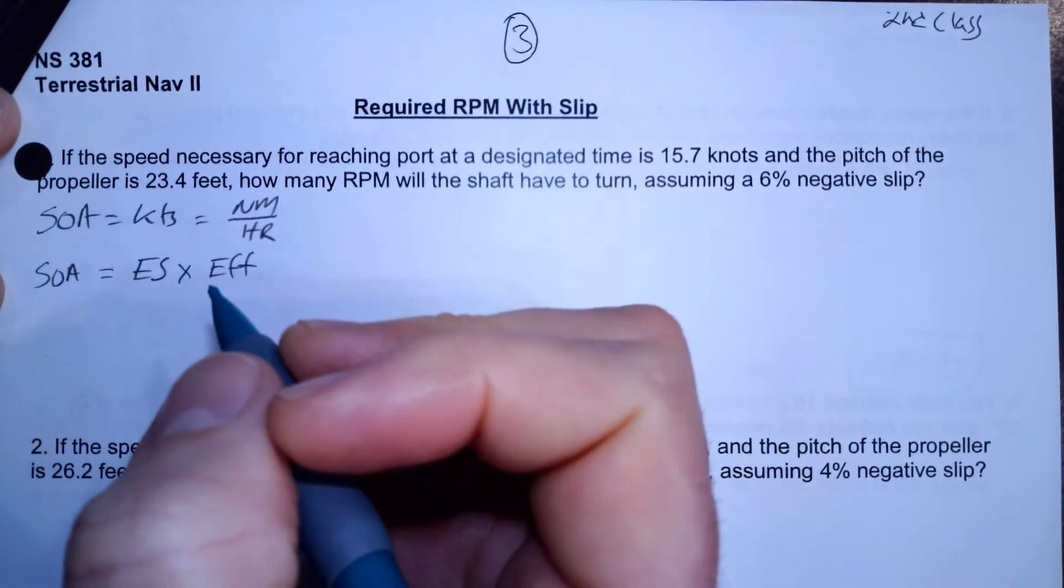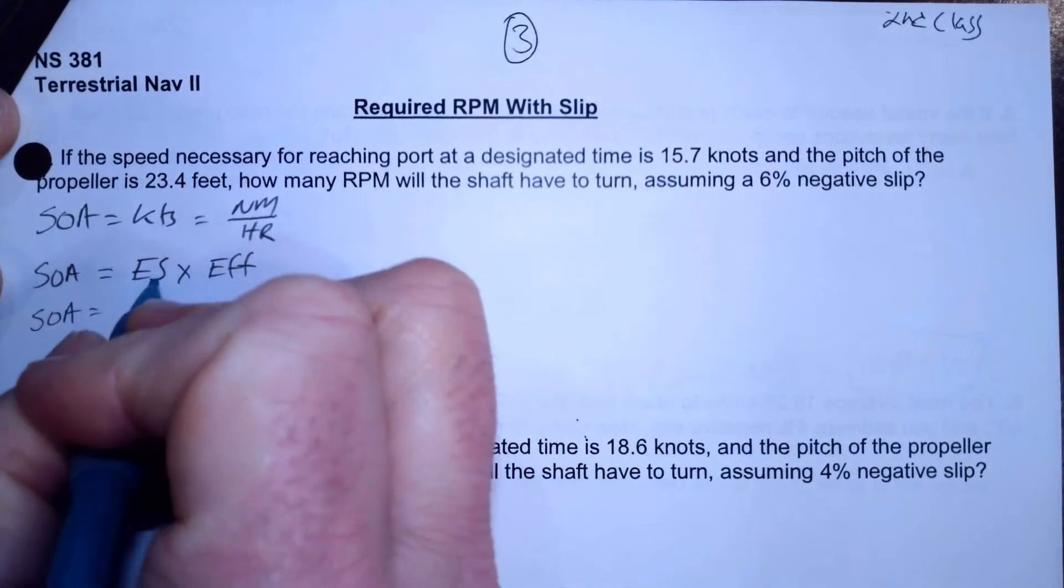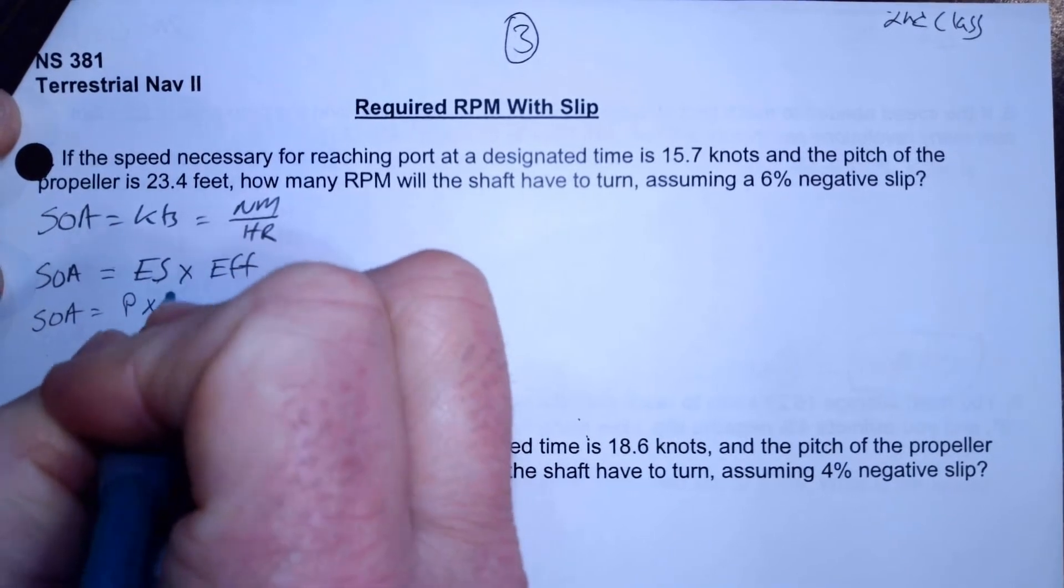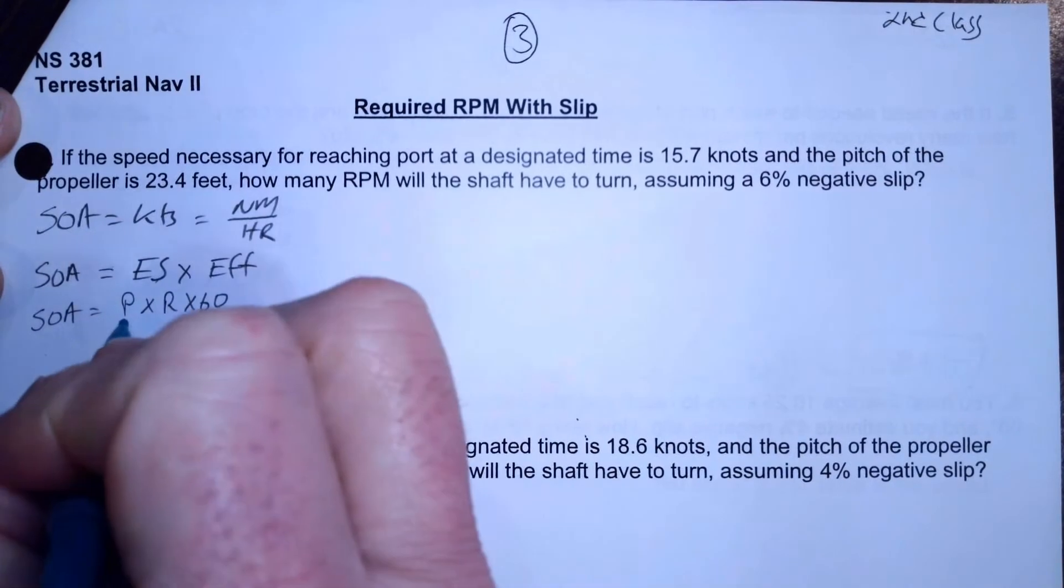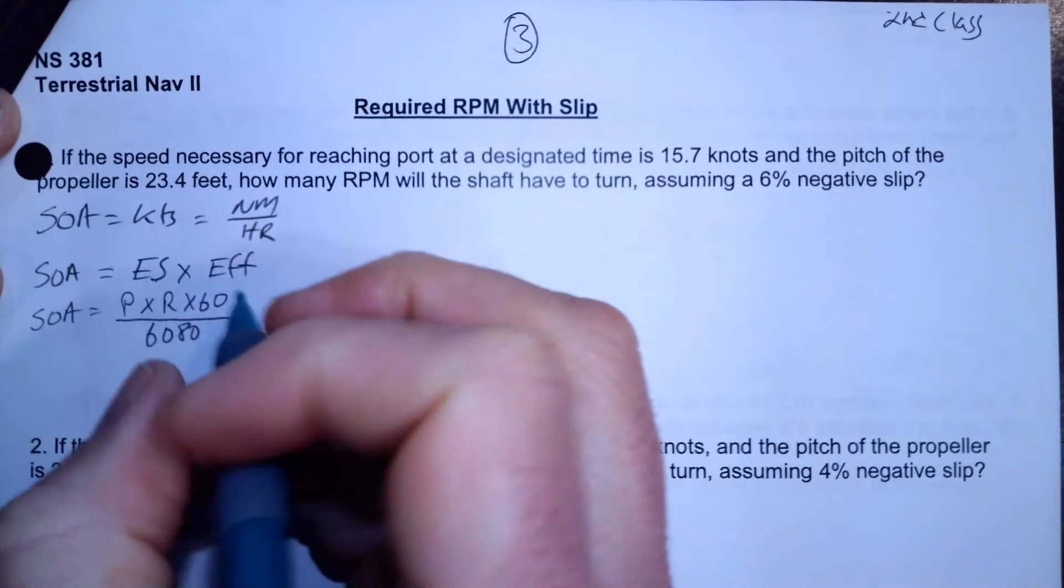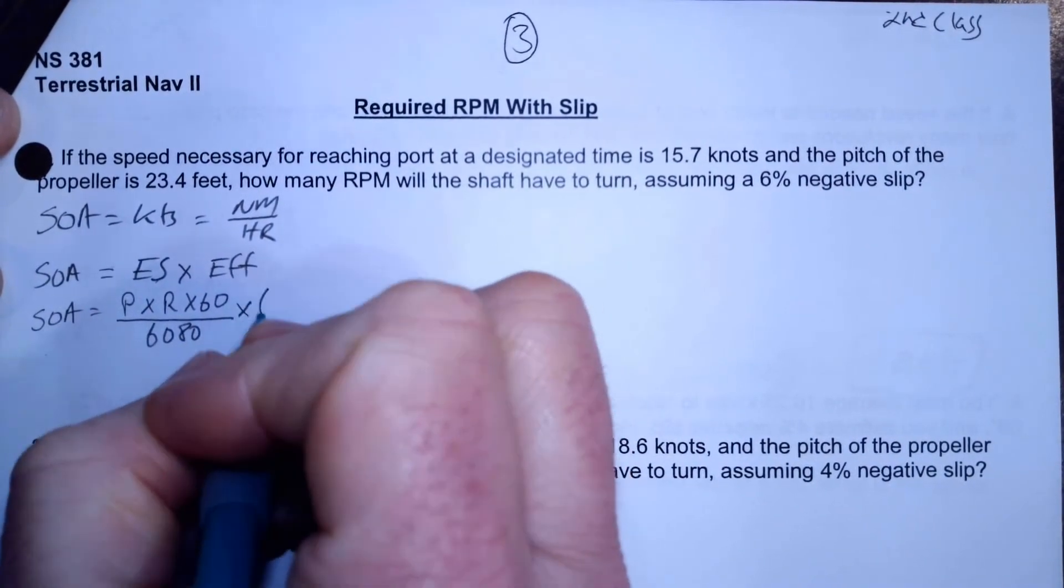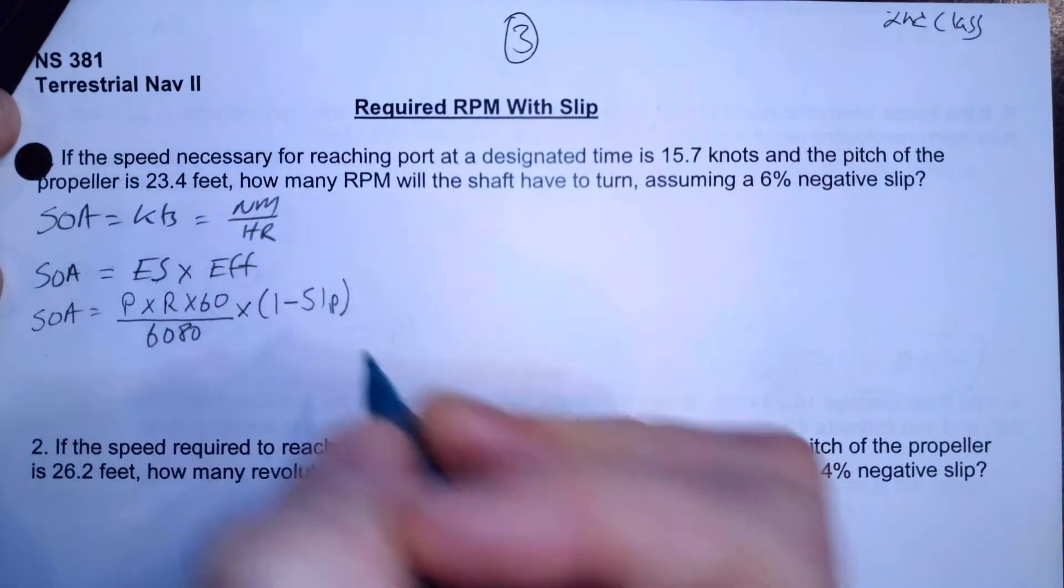That formula for speed of advance is our theoretical engine speed times our efficiency. Now, if I was to expand that formula out, engine speed is going to be pitch times RPM times 60, that's a conversion factor to go from minutes to hours, divided by 6080, that's a conversion factor to go from feet to miles. And then that's going to be multiplied by one minus the slip, because that's what efficiency is.